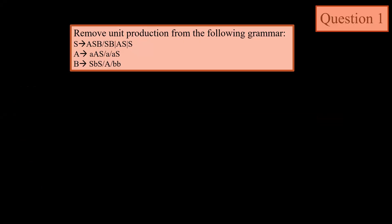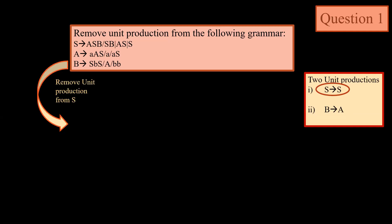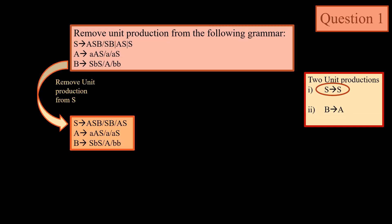The first question says: remove the unit productions from the following grammar. If we see this grammar, we have two unit productions: one is S → S, and another is B → A. First we will remove S → S, which is a self unit production. When we remove this unit production from S, the grammar has S removed from the right side. The second unit production is B → A.